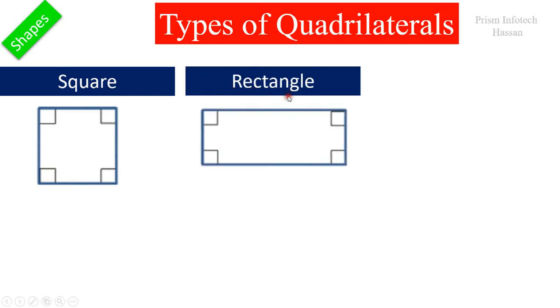Next one is a rectangle. In this shape, opposite sides are equal and all angles are right angles.